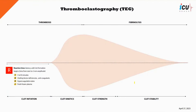The first parameter is R-time, or the reaction time phase. This phase measures the time it takes for the blood to begin clotting after the addition of a clotting activator. It reflects the latency before the initiation of the coagulation cascade, representing the enzymatic activation and thrombin generation. Normally, it takes five to ten minutes to reach two millimeters amplitude. It would be prolonged in cases of clotting factor deficiencies or the presence of anticoagulants. Fresh frozen plasma is indicated in patients with bleeding and prolongation of the R-time.